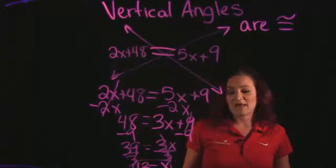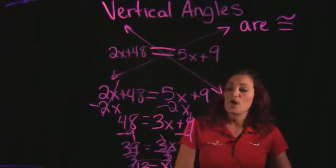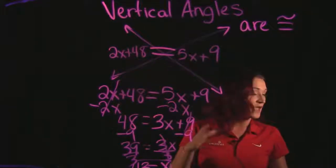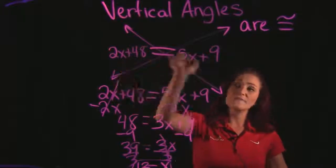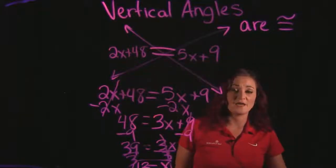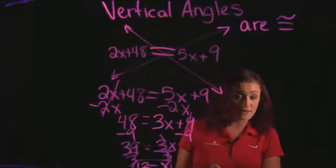Now we've got to keep in mind 13 is not the solution to this problem here. We've got to remember that we're solving for the angle and the angle is not x. The angle is either 2x plus 48 or 5x plus 9. And since these two equal each other, you only need to pick one of these.